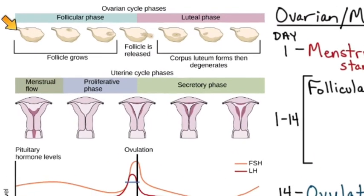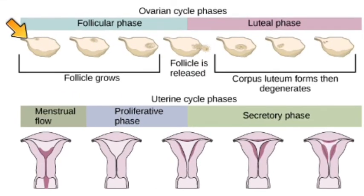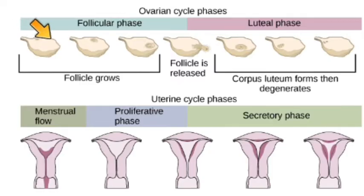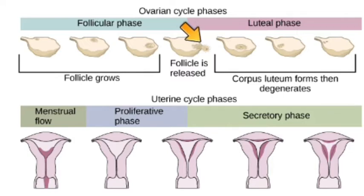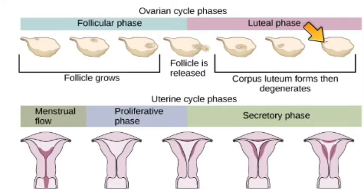On the top of the diagram we can see what's taking place in the ovary. A follicle — basically an egg and all of its surrounding supporting cells — will grow during the follicular phase, then release the egg during ovulation. The remaining follicle becomes something called the corpus luteum, which will eventually degenerate or die off.